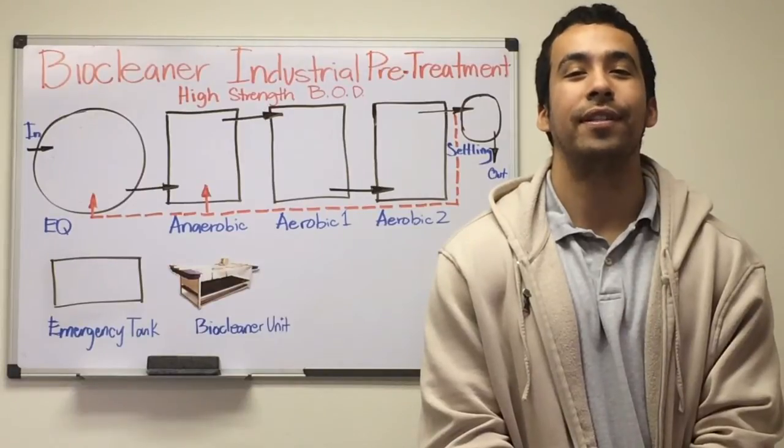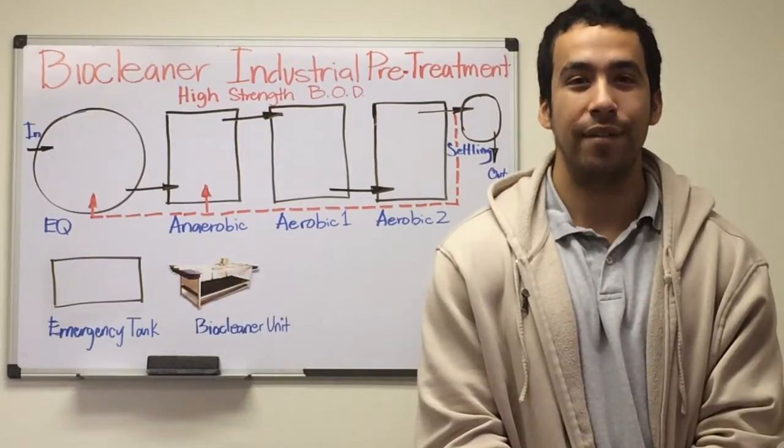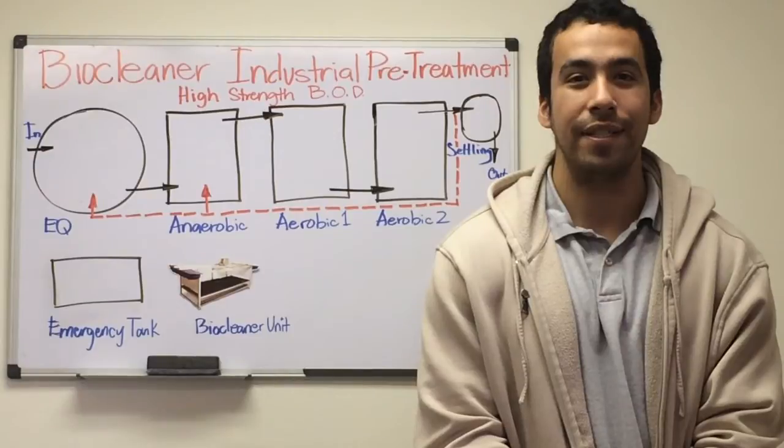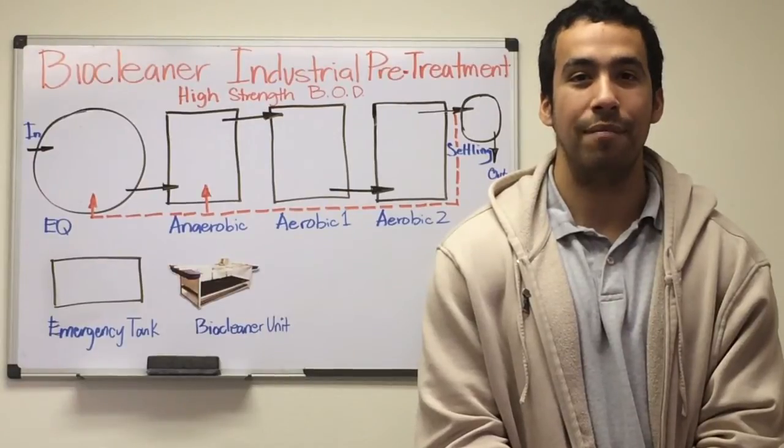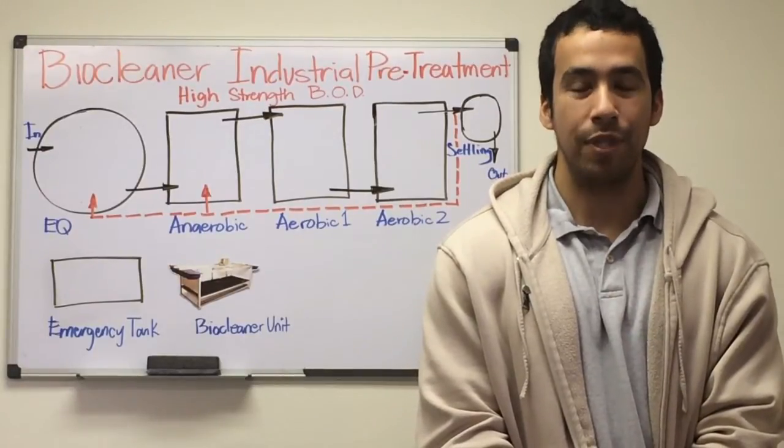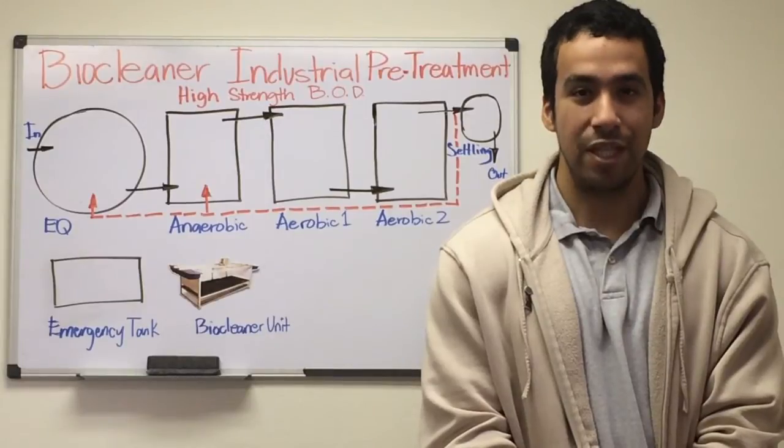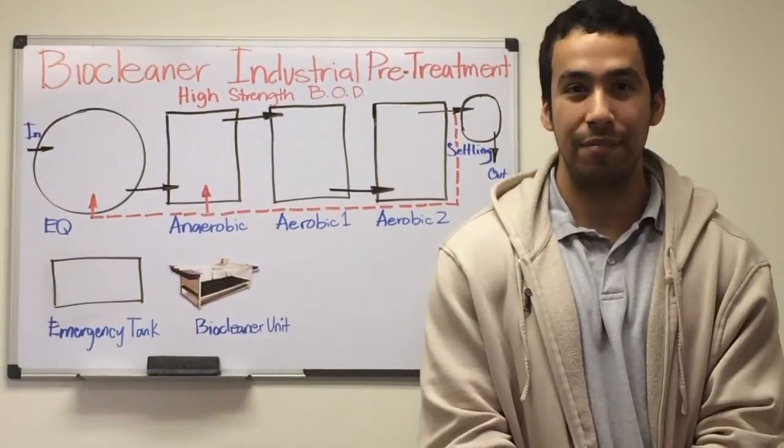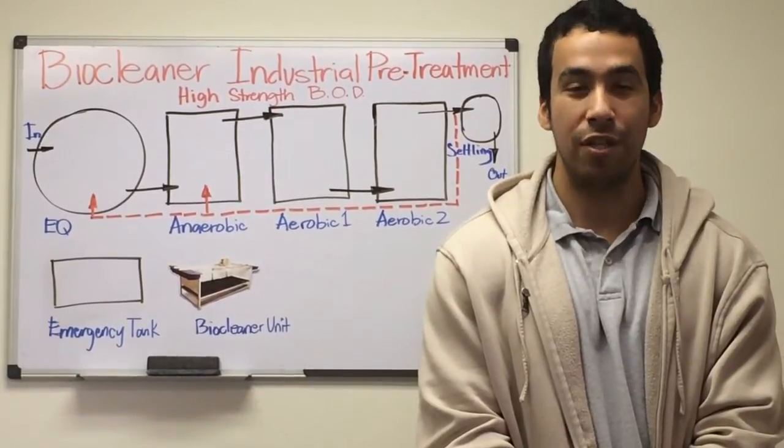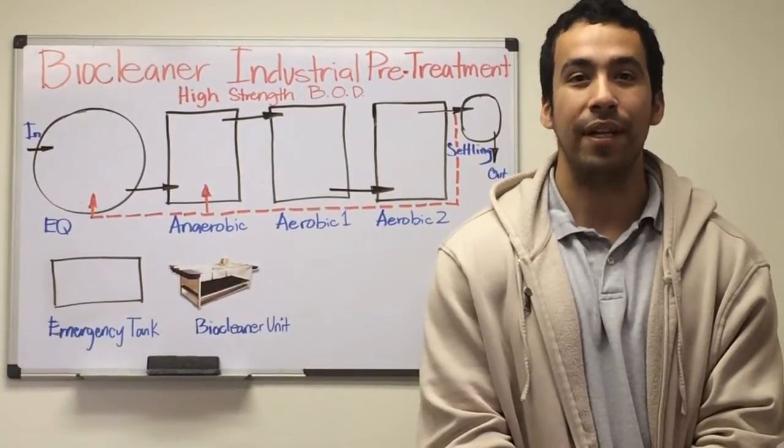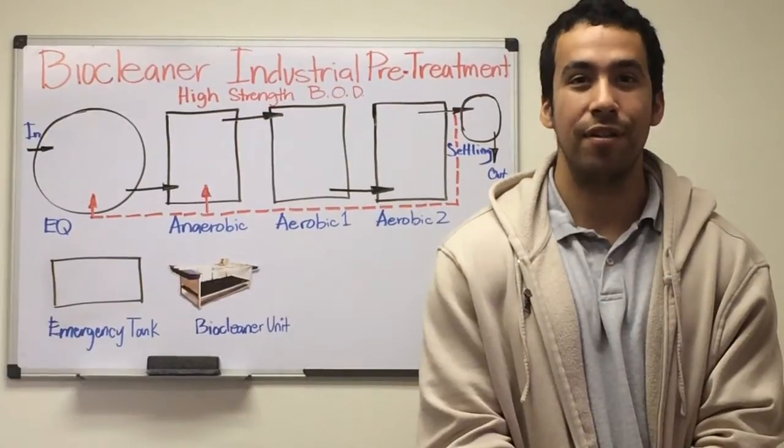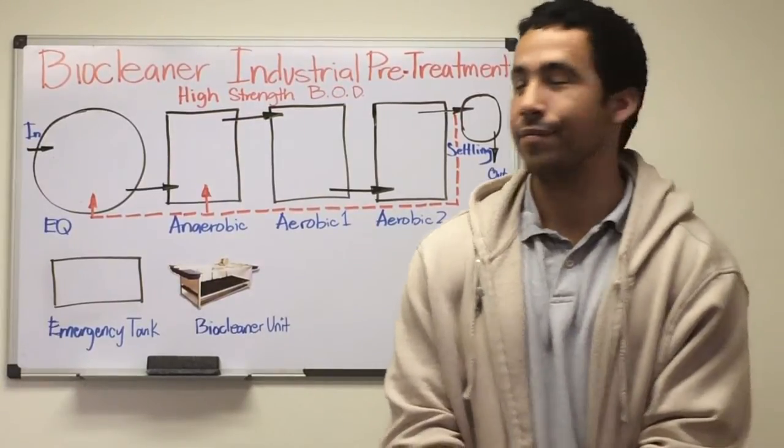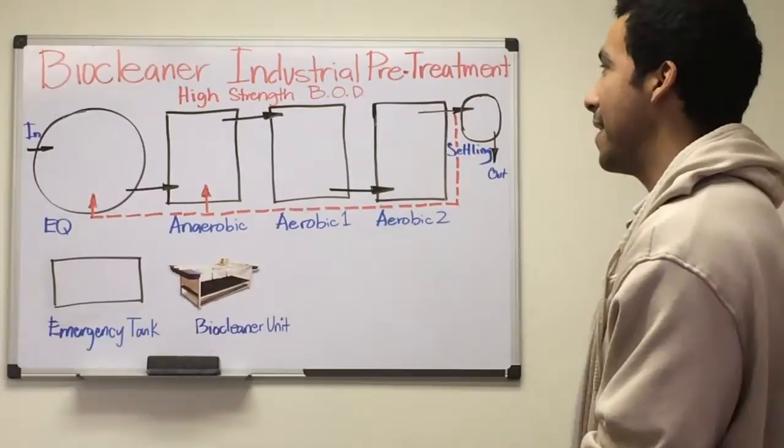What is pretreatment? Pretreatment is an industrial wastewater facility that treats their wastewater and discharges it to a certain limit where they can discharge to the sewer, where the municipality can treat it and discharge to the environment. This is a basic flow chart of an industrial pretreatment process using biocleaner.